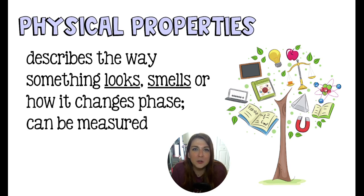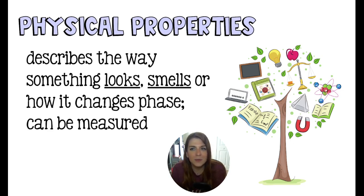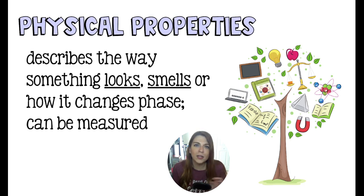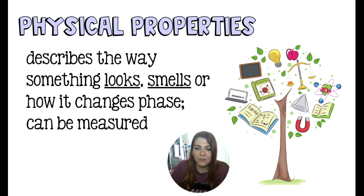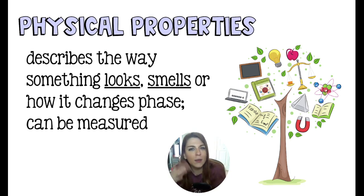A physical property is going to describe the way that something looks, smells, how it changes, how it feels. Typically they can be measured, but sometimes they are going to be more qualitative things — like my hair is this brownish-red color, my eyes are green, I am five foot six inches tall. Those are things that would describe my physical appearance — those would be physical properties.